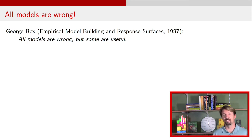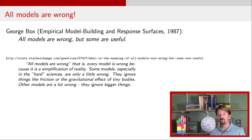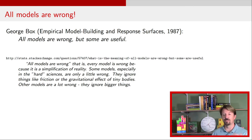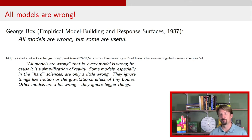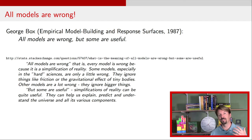I just thought I would repeat it here. Although this is a video and it's a terrible idea, I'm going to read the response that I thought was spot on. All models are wrong in the sense that they're a simplification of reality. Some models, especially in the hard sciences — think about Newtonian mechanical models — are only a little wrong. They typically ignore things like friction or gravitational effects of small bodies. But other models can be a lot wrong, and they might ignore much bigger things.